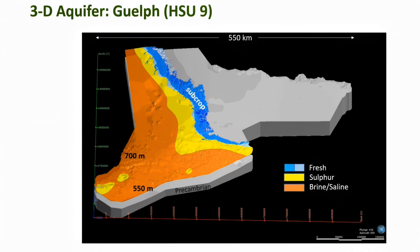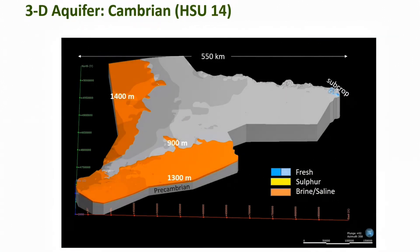This slide is for the Guelph aquifer, showing the hydrochemical zonation from a depth of approximately 700 meters to subcrop. The deepest of the bedrock aquifers is the Cambrian, at 900 to 1,400 meters below the surface. It is entirely comprised of brine in Southern Ontario, with the exception of a small outcrop area in the east that is geographically and geologically isolated from the main body of Cambrian in Southern Ontario.